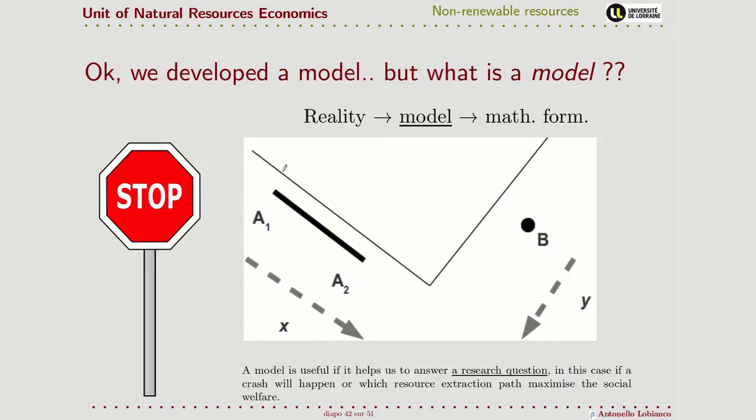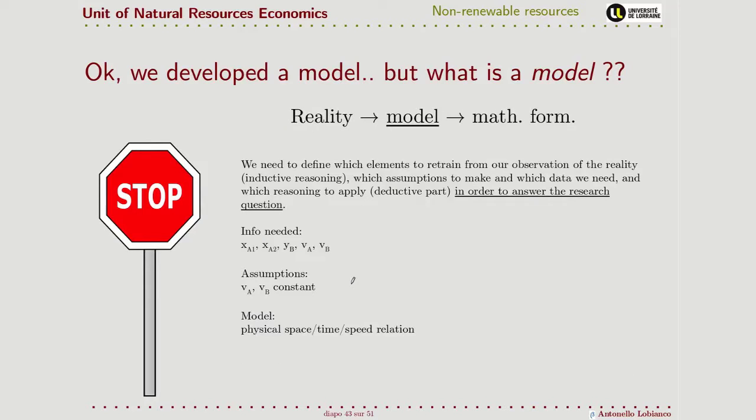After we pick up the elements that we want to know, we need to give them a mathematical formalization. The elements we want to know are, if we consider here the center where the impact may or may not happen, what we want to know is this distance here for B, and these two distances here for A1 and A2, and the speed that they travel.